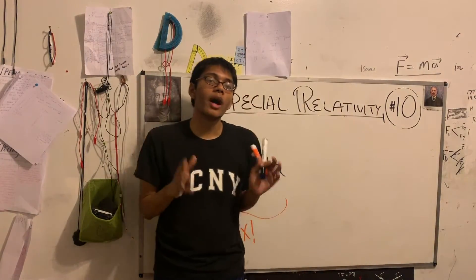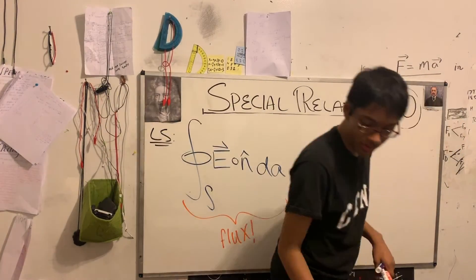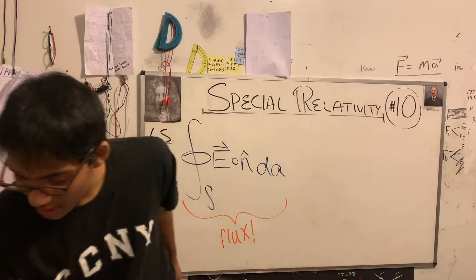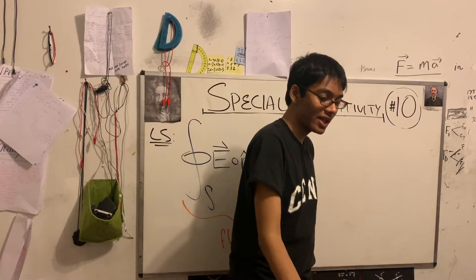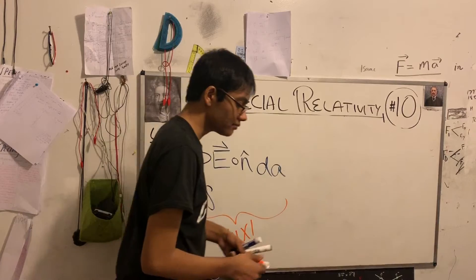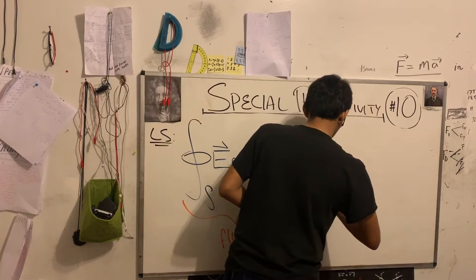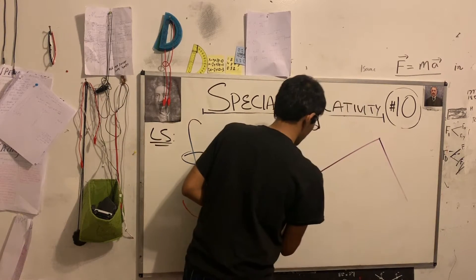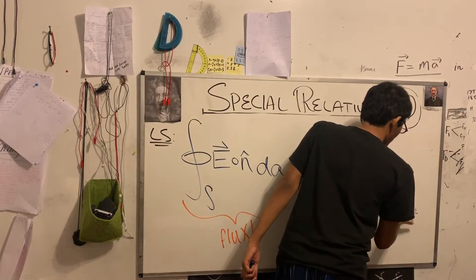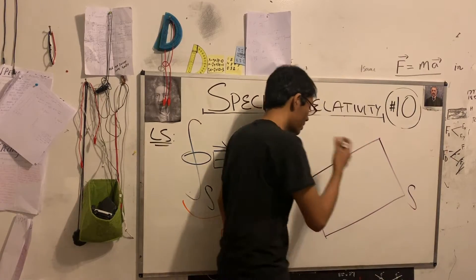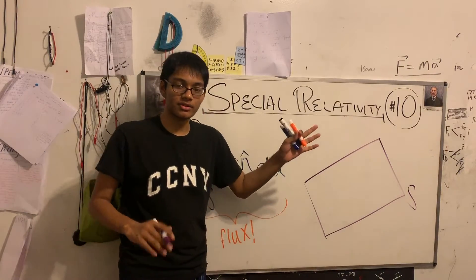Let's begin in the simplest possible scenario. I have some kind of planar region. What do I mean by planar? Something like a sheet of paper — that would be classified as a planar region. So let me take my planar region right here and draw it. There goes my planar region. And if I want to be fancy, I can denote it with the surface letter S. My surface is the planar region.